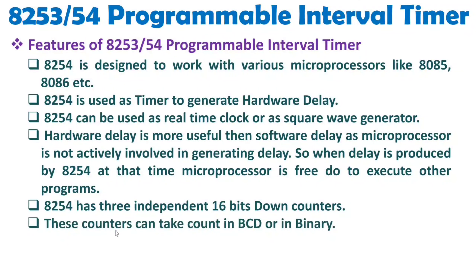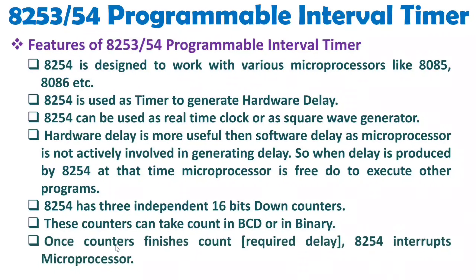These counters can take values in BCD as well as binary. With BCD you have four decades, and in binary you have 16 bits. Once a counter finishes its count, it generates an interrupt which is given to the microprocessor, indicating the count is finished. So whenever that delay was generated by 8254, the microprocessor was free to execute its own tasks, and once the interrupt comes, the microprocessor knows the delay is completed. Those are the basic features of 8253 and 8254.